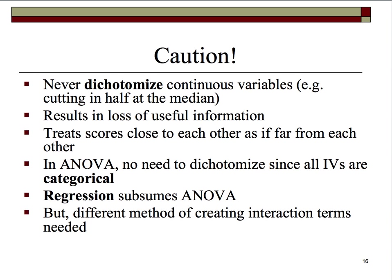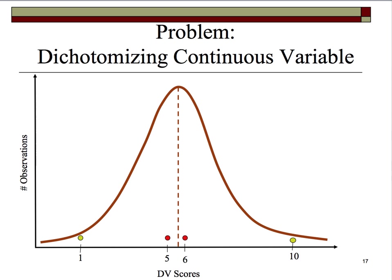Any test you want to do using correlation, t-test, ANOVA, or ANCOVA can be done in multiple regression. But there is a difference in the way we create the interaction terms in multiple regression — they are not automatically created for us. Let's take a quick look at the big problem with dichotomizing continuous variables.